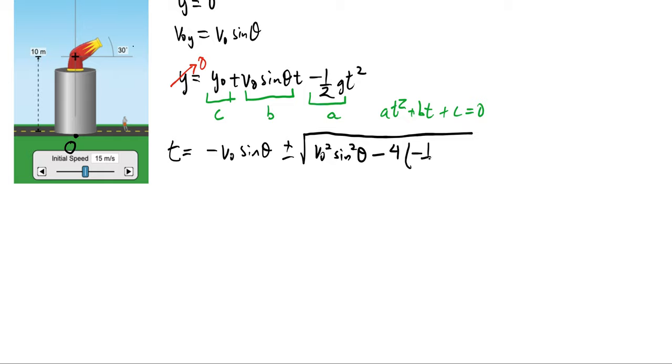So include that negative sign, that's important, times c, which is y-naught, put that all over 2a, so that's 2 times minus a half g.